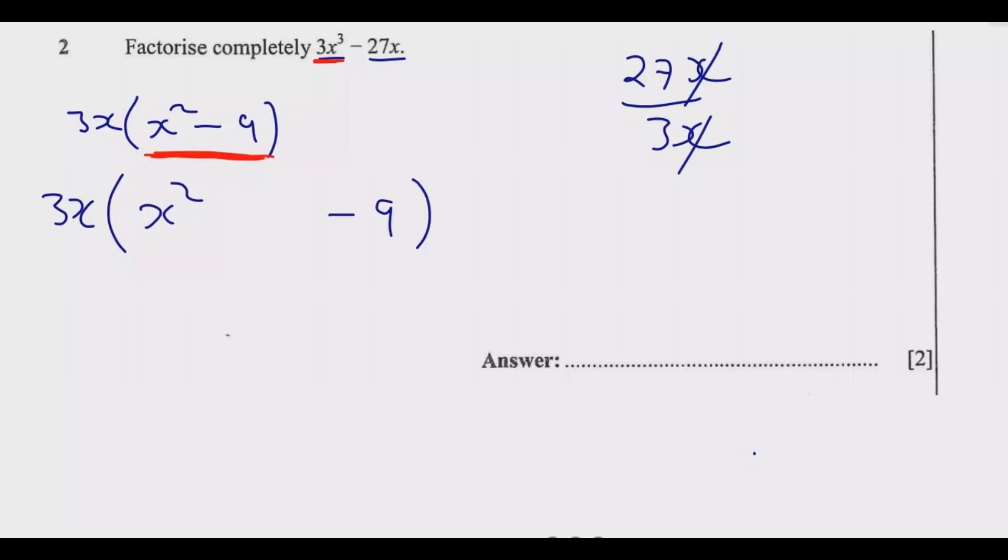We have 0x here, which we can write as 3x - 3x = 0. So we replace that. We have 3x(x² + 3x - 3x - 9). This is what happens when we fill in the middle term between the perfect squares.